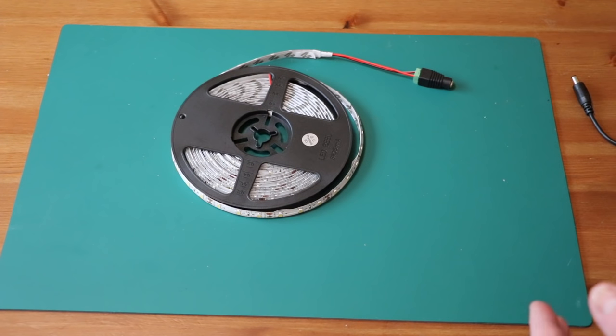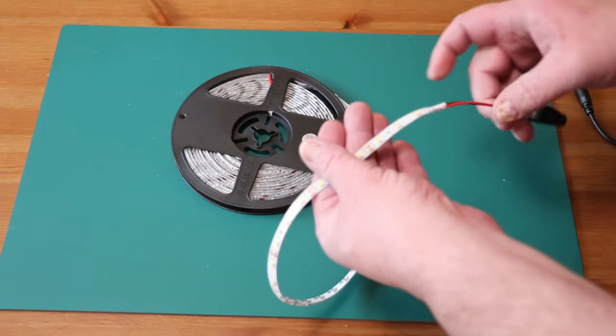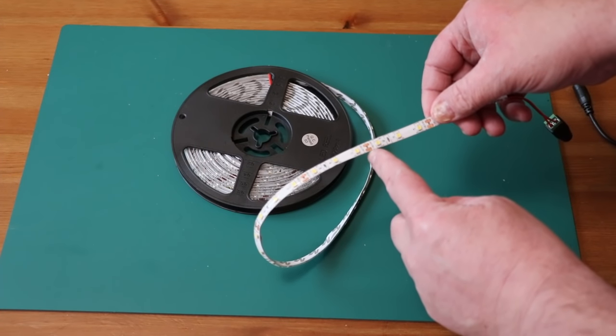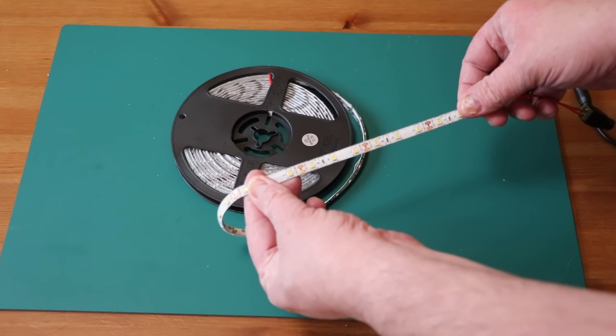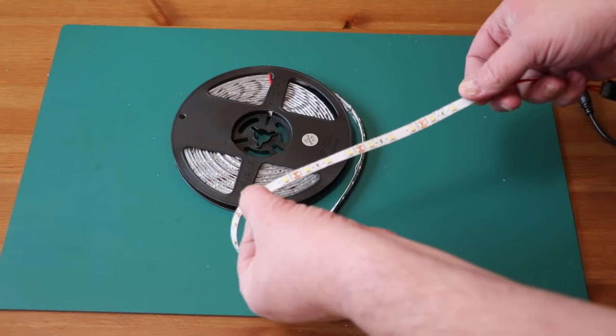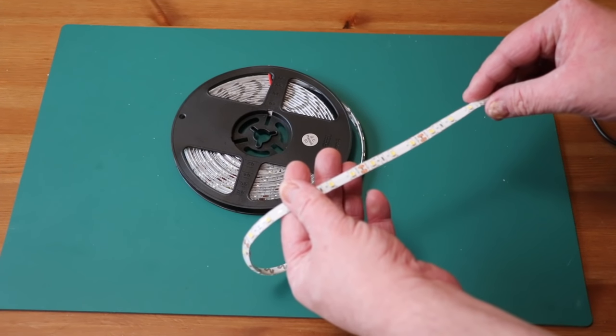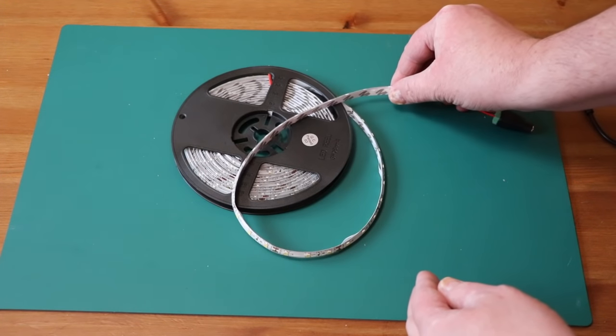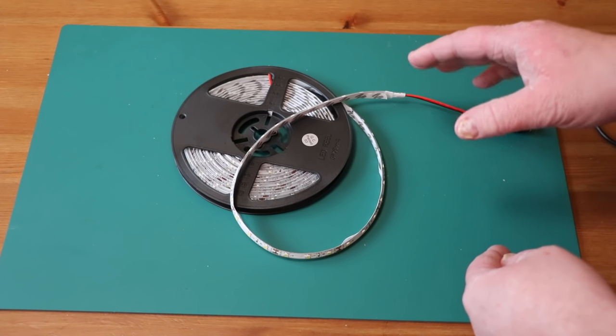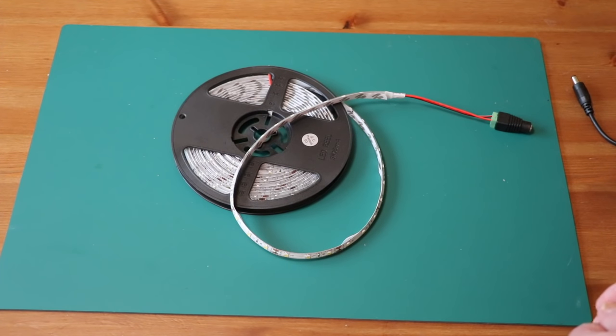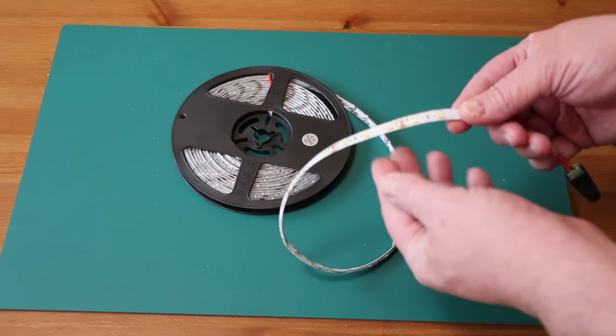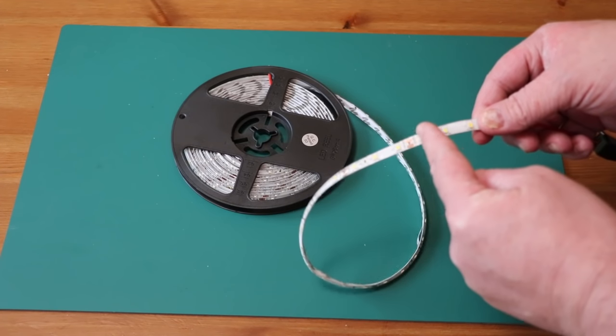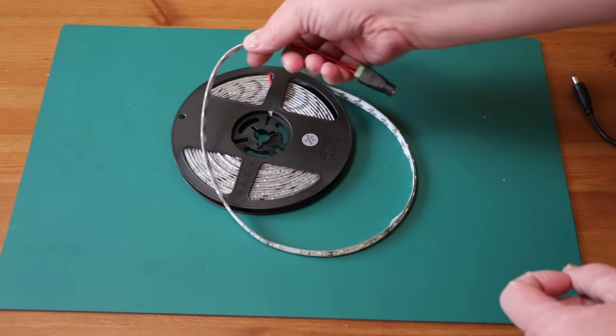When you purchase LED lights they come in lots of different shapes and sizes. They come in a long strip and you can see there's some copper pads here which allows you to cut this strip down to your preferred length. There's a couple of important numbers when you're talking about LED strips - these ones here are 3528s and there's another type called 5050s, which refers to the actual size of the LEDs. I've chosen the smaller LEDs because you get more of them in the strip, which is perfect for what we want to do.